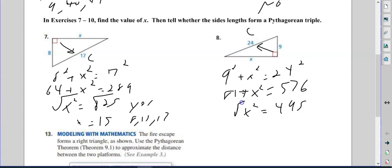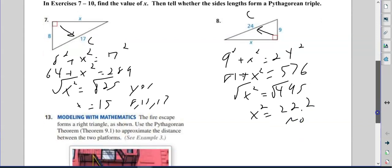And then when I take the square root of both sides, the square root of 495 is going to be a decimal, and it's going to be 22.2 rounded. So the answer is no, not a Pythagorean triple.